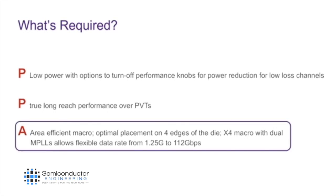All these considerations are very important. We keep talking about PPAs all the time — power, performance, and area — but along with area, what really matters a lot is an optimized macro that can go on all four edges of the die, that can be stacked, and that provides easy routability both on the package substrate and into the SOC. Part of the problem is that you're trying to move data across a very large chip — more data than in the past — so you have to figure out the most efficient way to get it from one side of the chip to another.